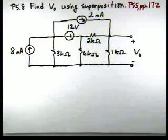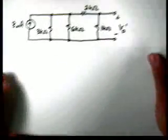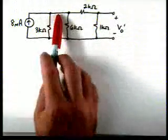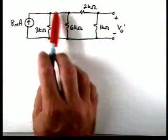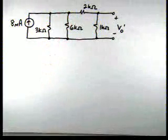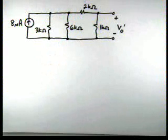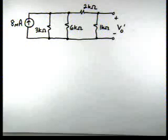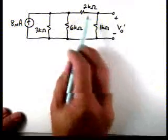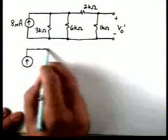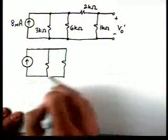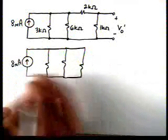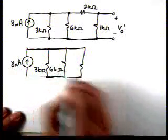Here's our circuit. We've got three independent sources, and we're going to analyze it with one source active at a time. Let's start with the 8 milliamp current source. The voltage source was connected here and we replaced it with a short. There was a 2 milliamp current source across the top — we replaced it with an open. So our circuit reduces to this, and we're trying to find V0 prime using resistor combinations, voltage division, and current division. Let's combine those two resistors in series and redraw the circuit. Now V0 prime disappears from this circuit because we've combined those two resistors together.